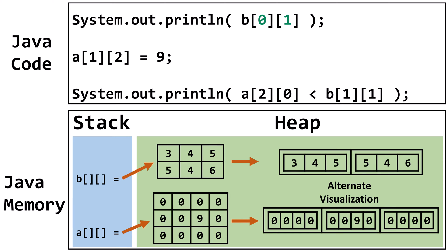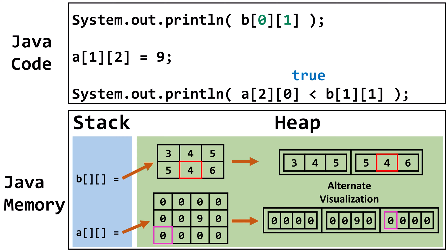This code will print the evaluation of the Boolean expression. Array A at row 2, column 0 is 0. Array B at row 1, column 1 is 4. The expression 0 is less than 4 evaluates to true.